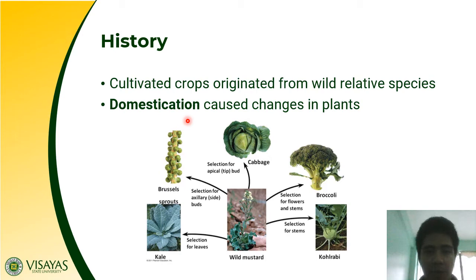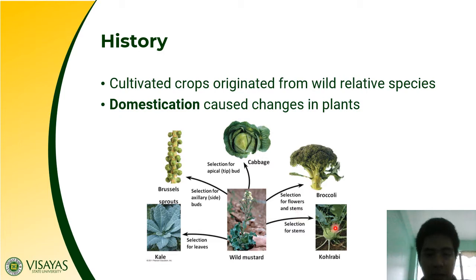For example, we have wild mustard. Our ancestors selected for leaves, which led to modern kale. They selected for axillary buds, leading to Brussels sprouts. Cabbage came from selection for the apical tip bud, broccoli from selection for flowers and stems, and kohlrabi from selection for stem. The process of domestication has led to a variety of Brassica species, and not only Brassica but many other crops as well.